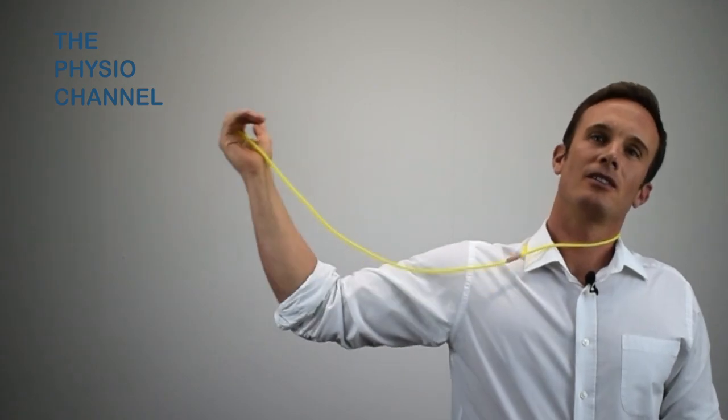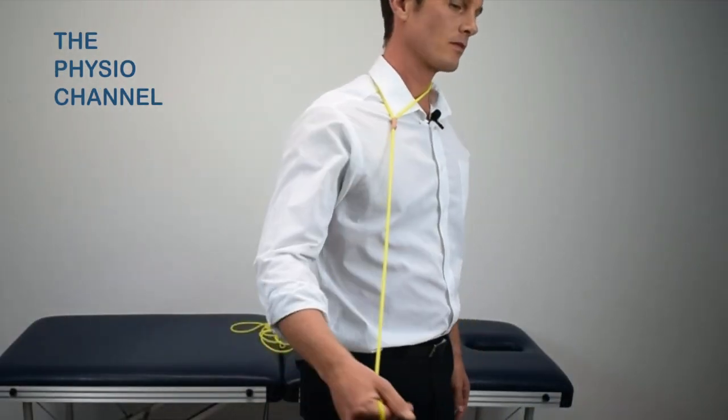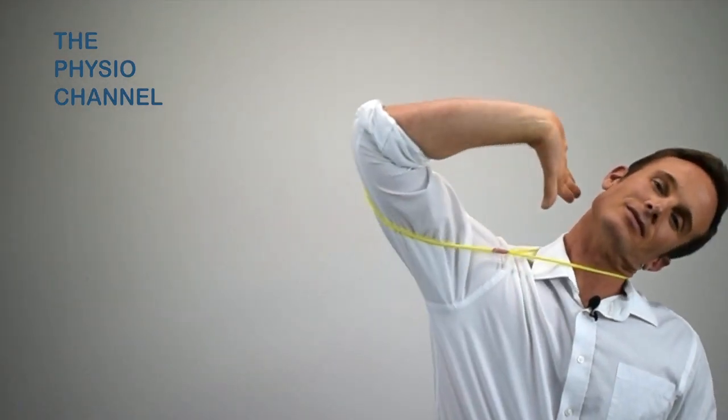Here are some very quick examples of tensioners for the median nerve, for the radial nerve, and for the ulnar nerve.